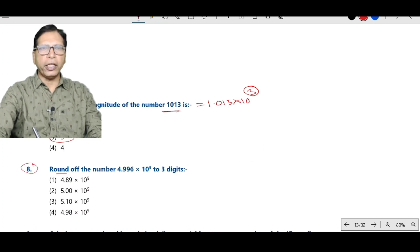Question number 8. Round off the number 4.996 into 10 to the power 5 to 3 significant digits. This becomes 5.00. Because after 4.996, this is more than 5. So one number added at the last digit. So this becomes 5.00 into 10 to the power 5, option 2 correct.